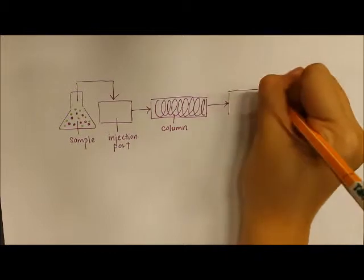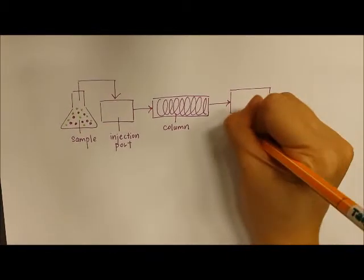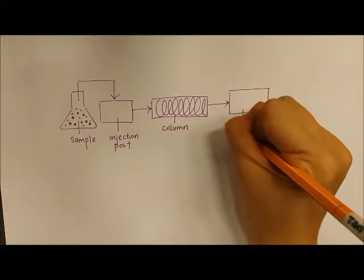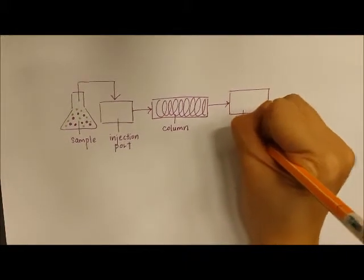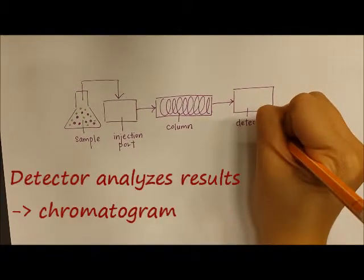A detector is placed at the end of the tube to detect the amount of components found inside the sample. The detector then analyzes the results and displays it in graphical form known as a chromatogram.